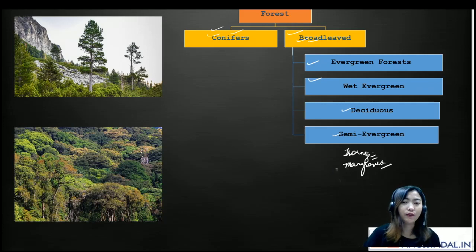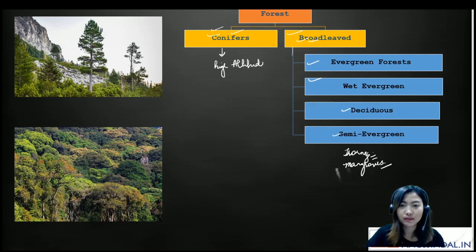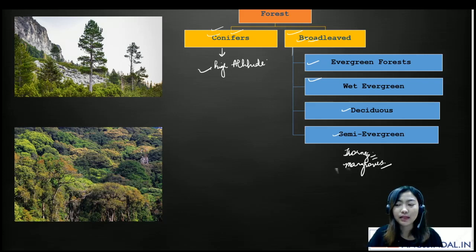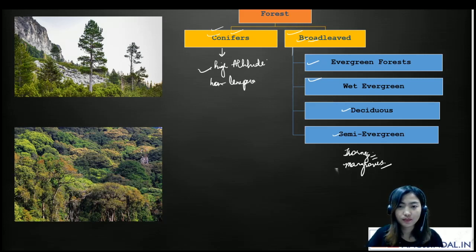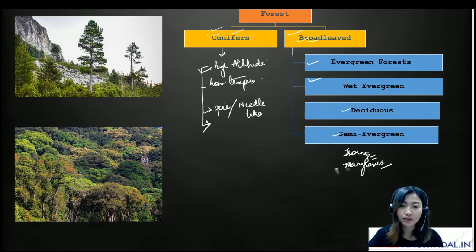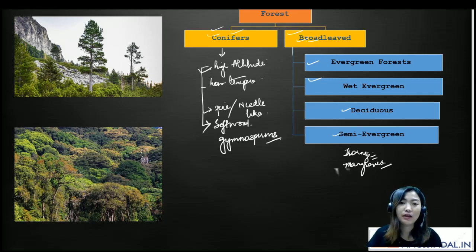Let's discuss what a conifer is. Conifers are present at high altitude, and in India they are mostly found in the Himalayan regions where the temperature is low. The leaves of conifers are pine-like or needle-like. They are softwoods and gymnosperms. Some examples are Cedrus deodara and Pinus wallichiana. I've given a picture of a conifer forest here.